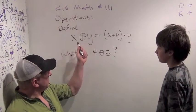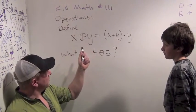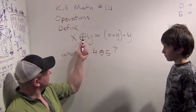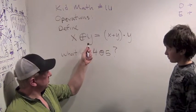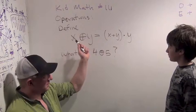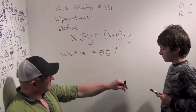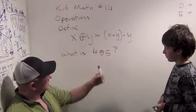So sometimes we define things to do with numbers in weird ways. I'm going to define something called circle plus. x circle plus y is equal to x plus y times y. And I just made this up, this isn't a real operation. But it's important to be able to see things like this and understand what they mean.